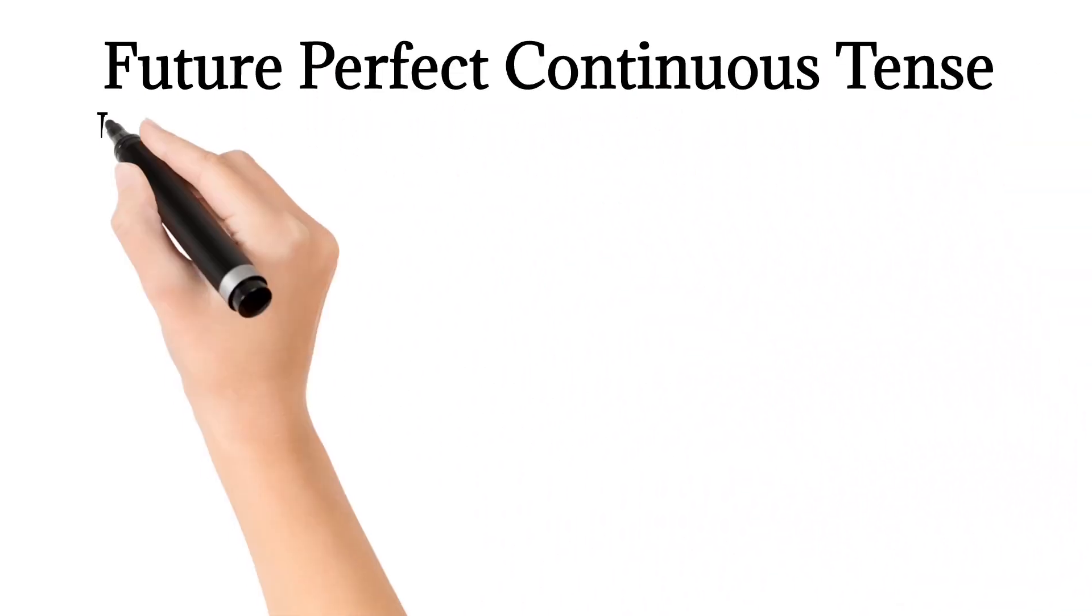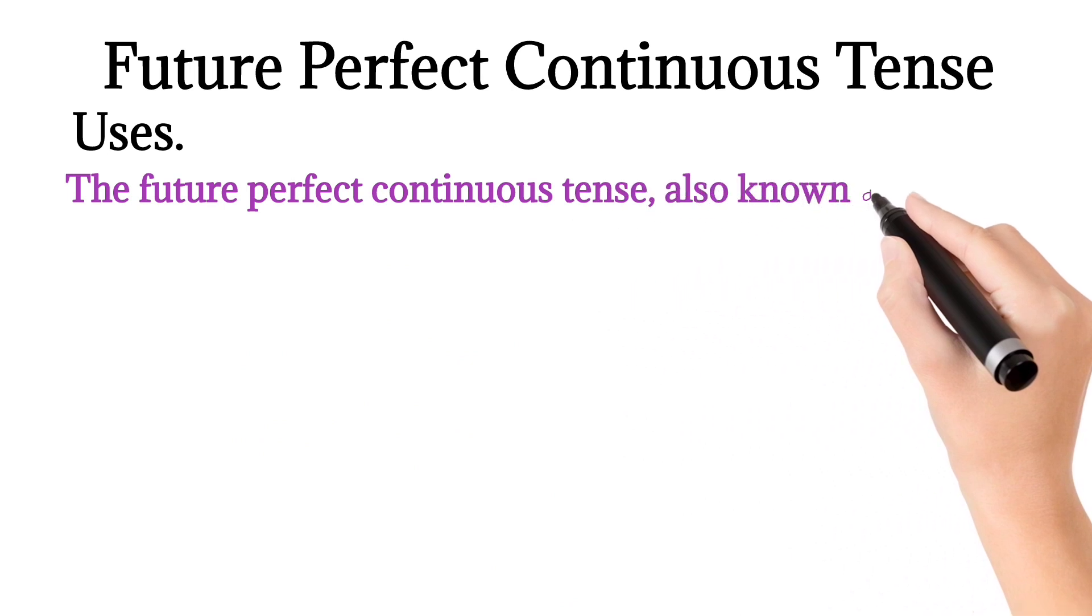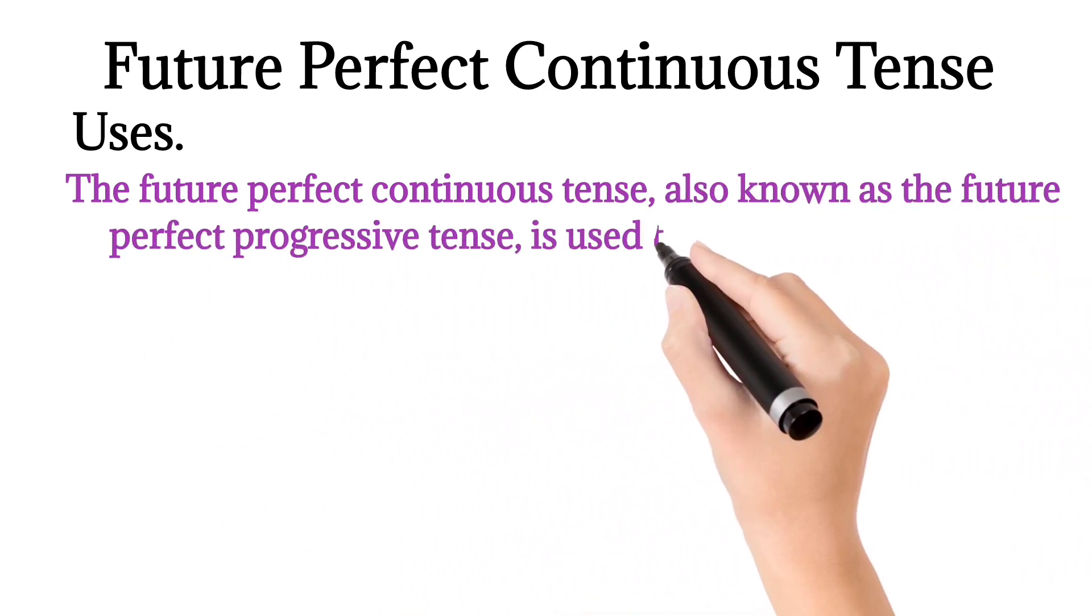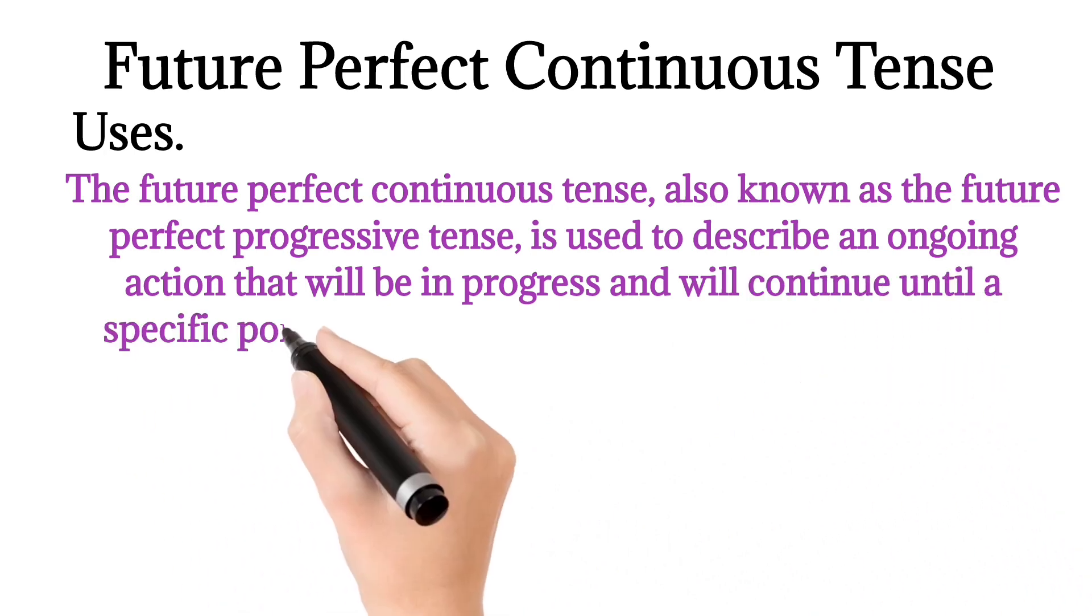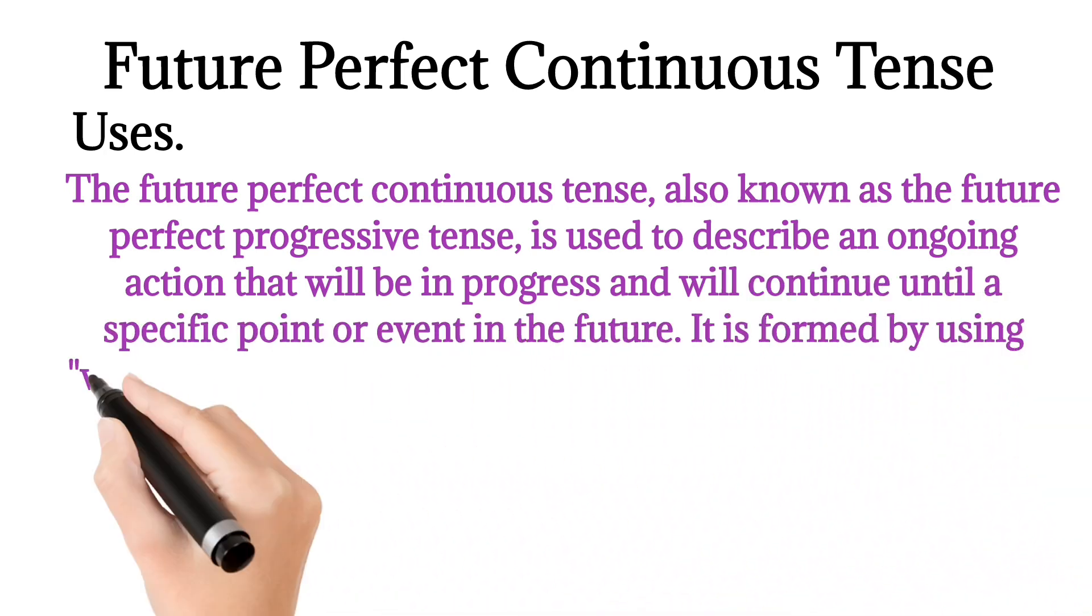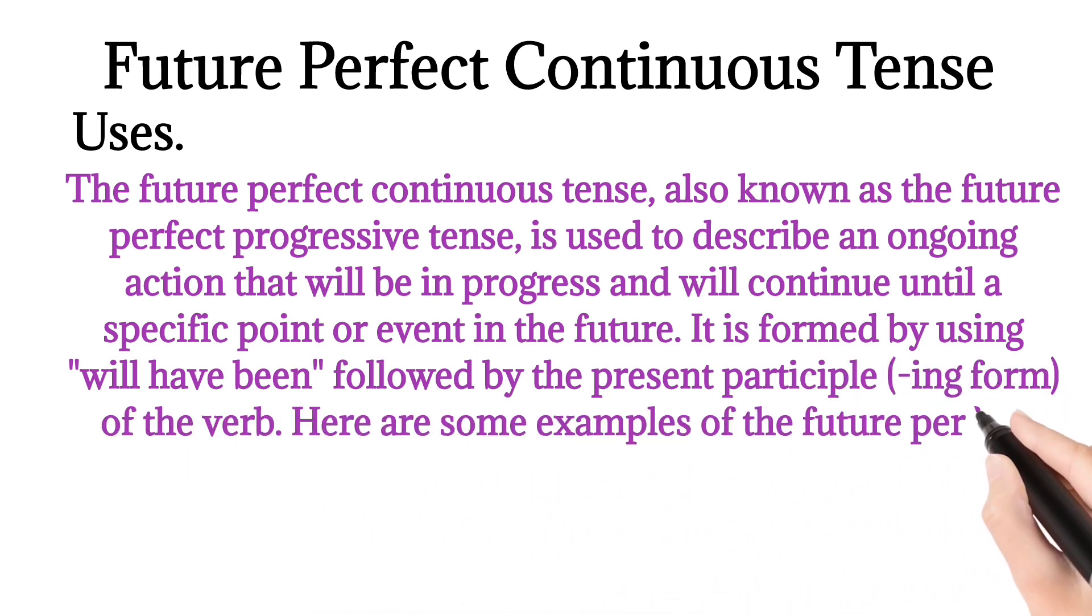The Future Perfect Continuous Tense, also known as the Future Perfect Progressive Tense, is used to describe an ongoing action that will be in progress and will continue until a specific point or event in the future.